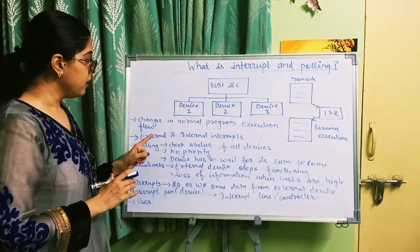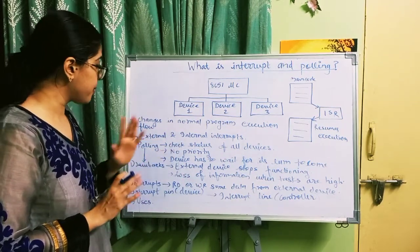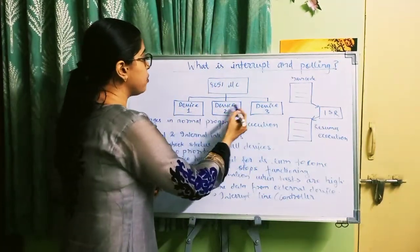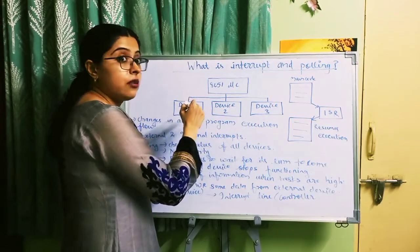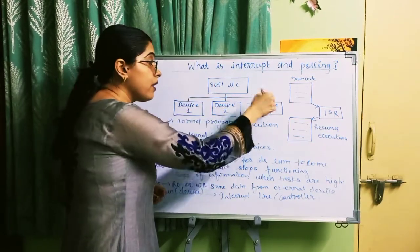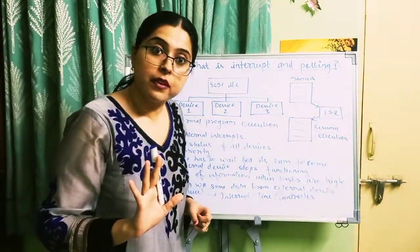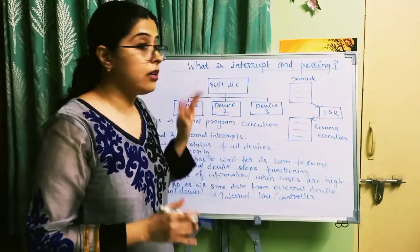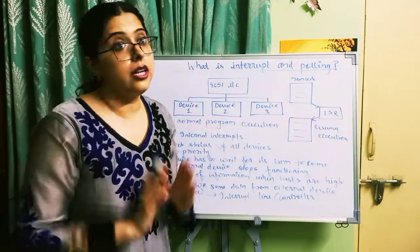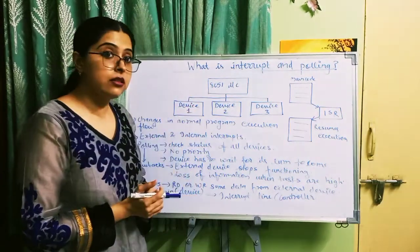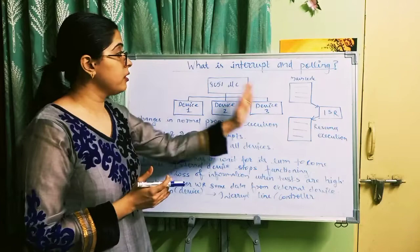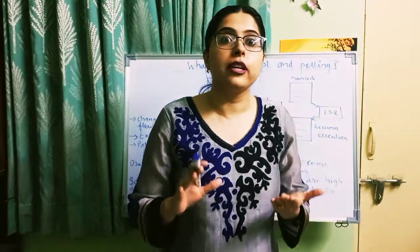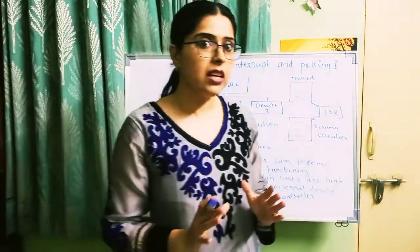One disadvantage of polling is that the microcontroller's time is wasted and waiting is involved. Polling is used to check the status of all devices, but there is no priority. Now you must be wondering why there is waiting. Here there is device 1, device 2, device 3 — when device 1 will be serviced, when device 2 and device 3 will be serviced, there is no priority. There is no priority that device 1 will be served first as the highest priority, then medium, then low priority. Because of this, the device has to wait for its turn to come.